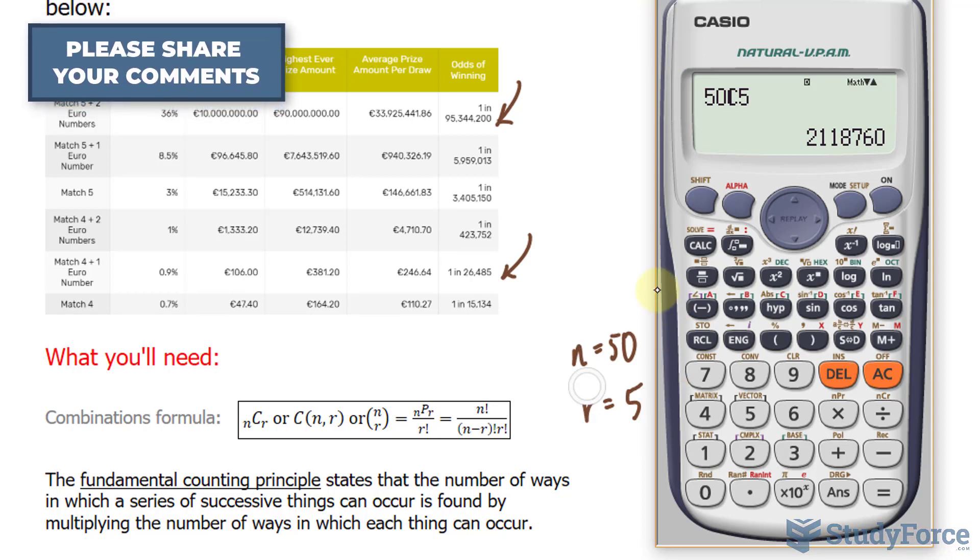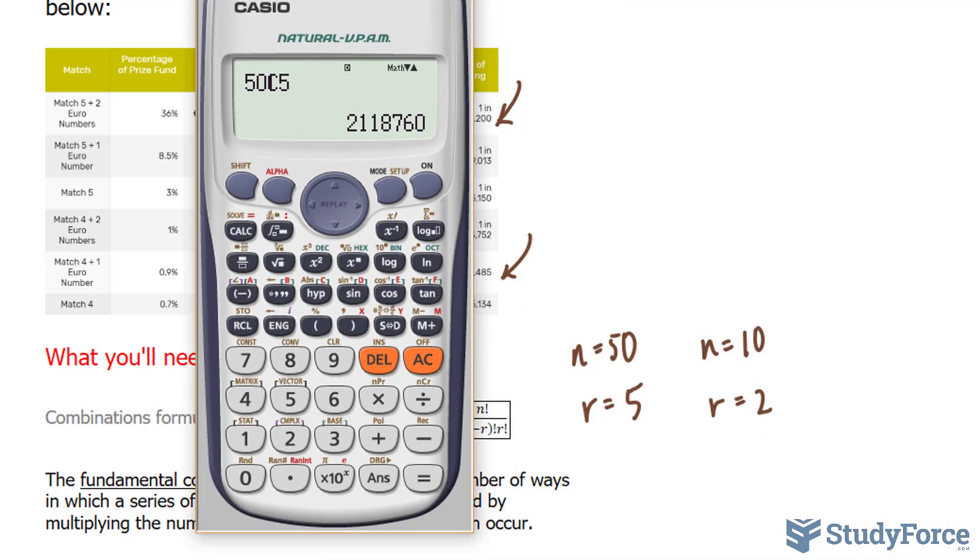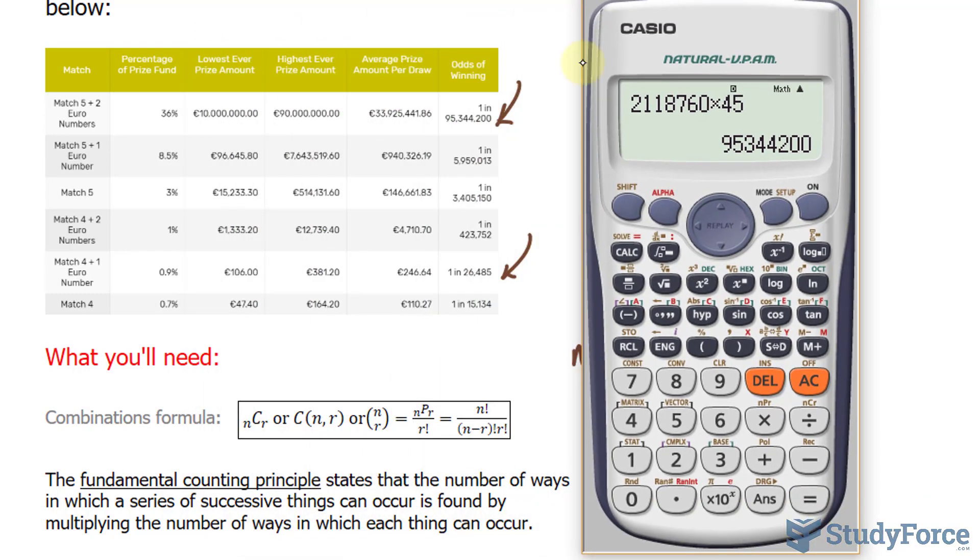So, if we're selecting 5 from 50, and that occurs in this many ways, and then in the next selection, we are selecting 2 from 10, and that occurs in 45 ways. We multiply this times 45, so 2,118,760 times 45 gives us 95,344,200, which is exactly what they report on their website. So, this is the probability of winning the jackpot.